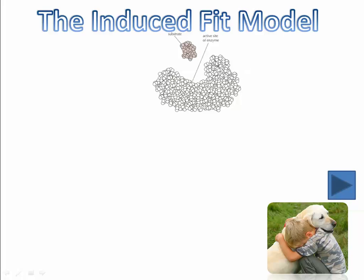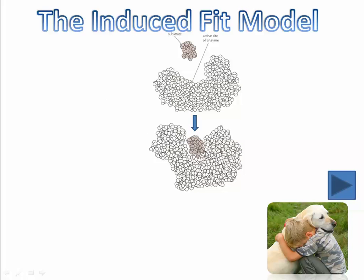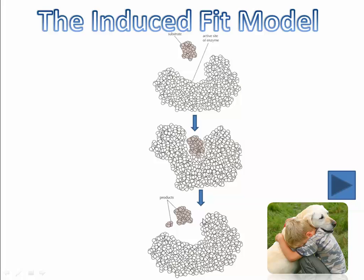This is called the induced fit model. The idea is that an enzyme and its substrate may not be as perfect a fit as we thought with the lock and key model. Instead, as the substrate gets closer, the enzyme changes shape — like attractions between the substrate involving positive and negative charges, hydrophobic or hydrophilic interactions. As the substrate gets closer, the enzyme undergoes a conformational change to actually fit the substrate more precisely. And then when the substrate has been broken down to its products, the enzyme reverts back to its original shape.